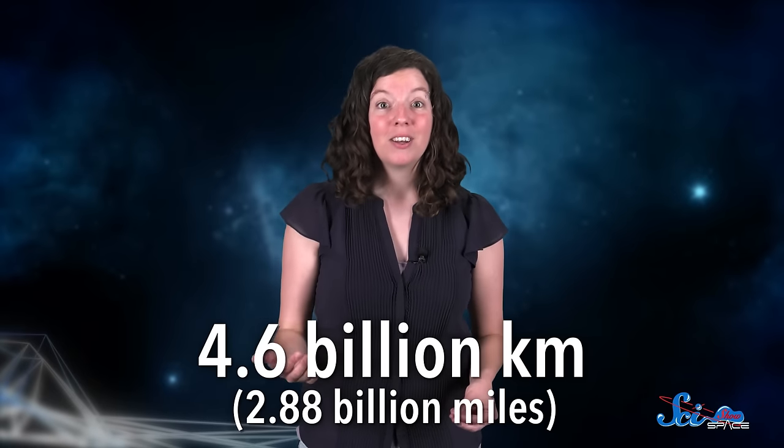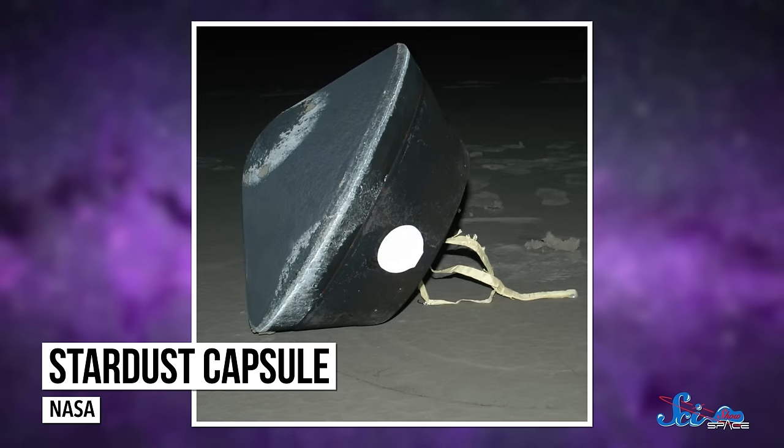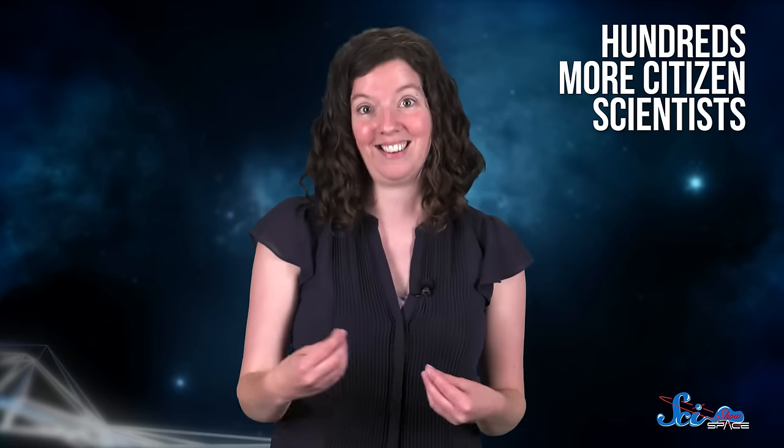When the Stardust craft looped back around close to Earth after a 4.6 billion kilometer journey, it dropped the capsule with the collector over Utah. Samples of comet dust were distributed to about 150 scientists around the world, and scans of the interstellar dust were released to hundreds more citizen scientists.